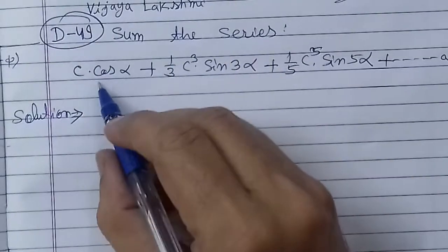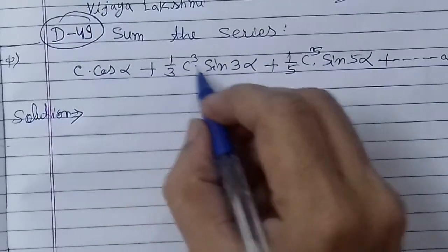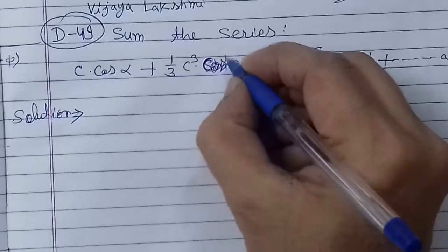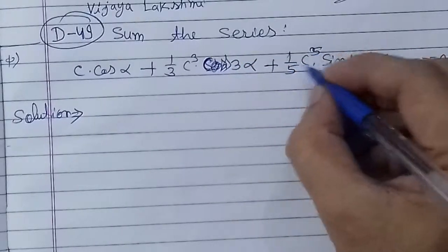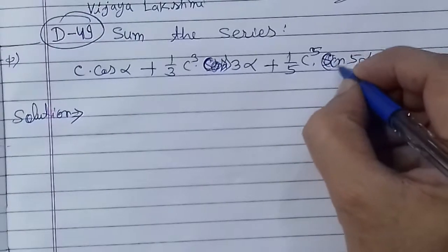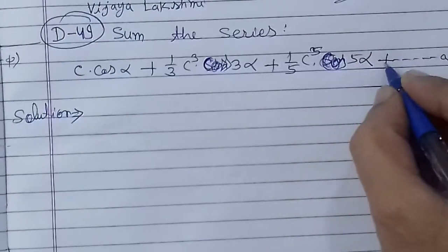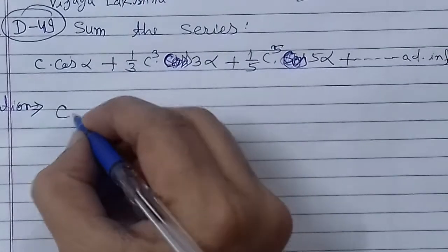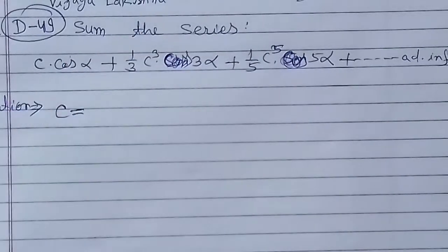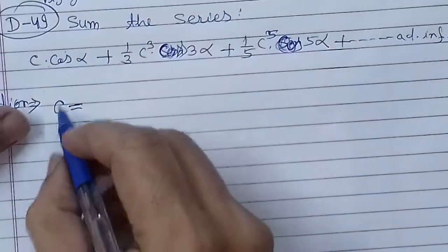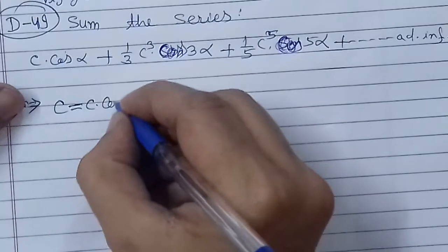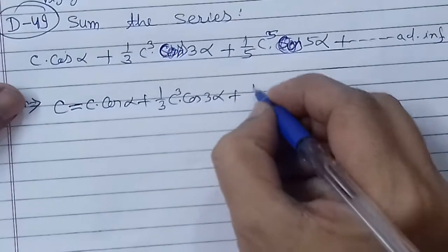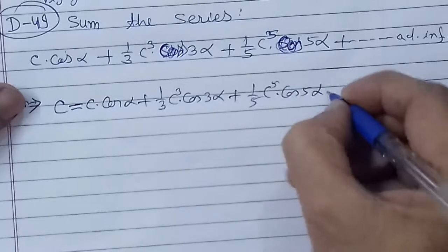Sum the series: C cos α + (1/3) C³ cos 3α + (1/5) C⁵ cos 5α + and so on to infinity. We need to find the sum of this cosine series.